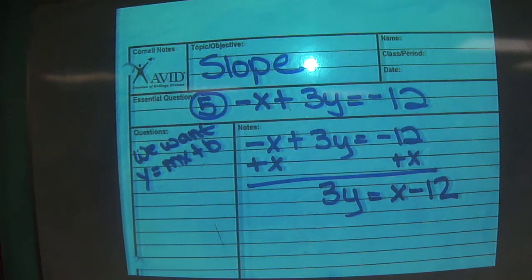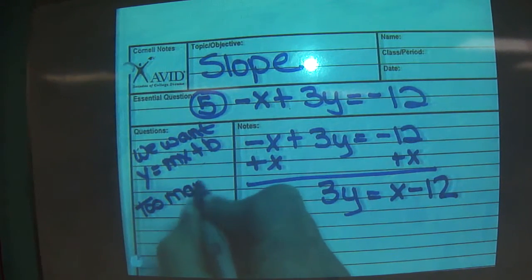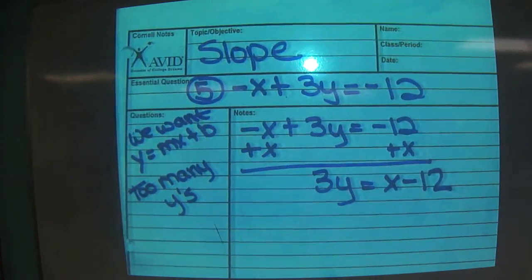Are we ready? Do we have y equals mx plus b? Uh-oh. How many y's do we have? How many are we supposed to have? One. So what do we have to do? Divide by 3. Okay, so here we have a problem. Too many y's. So what do we do?